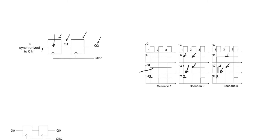You might ask: how can you be sure we will not still be metastable one cycle later? The answer is, I'm not sure — I just know that the probability of that happening is really low. Also, a cycle later the data D has not been removed yet in any of the three scenarios, so we are sampling it very comfortably. There cannot be a setup time violation or a hold time violation on the first register R1 — the data has been stable for more than a cycle, so there's no way it's going to be metastable.